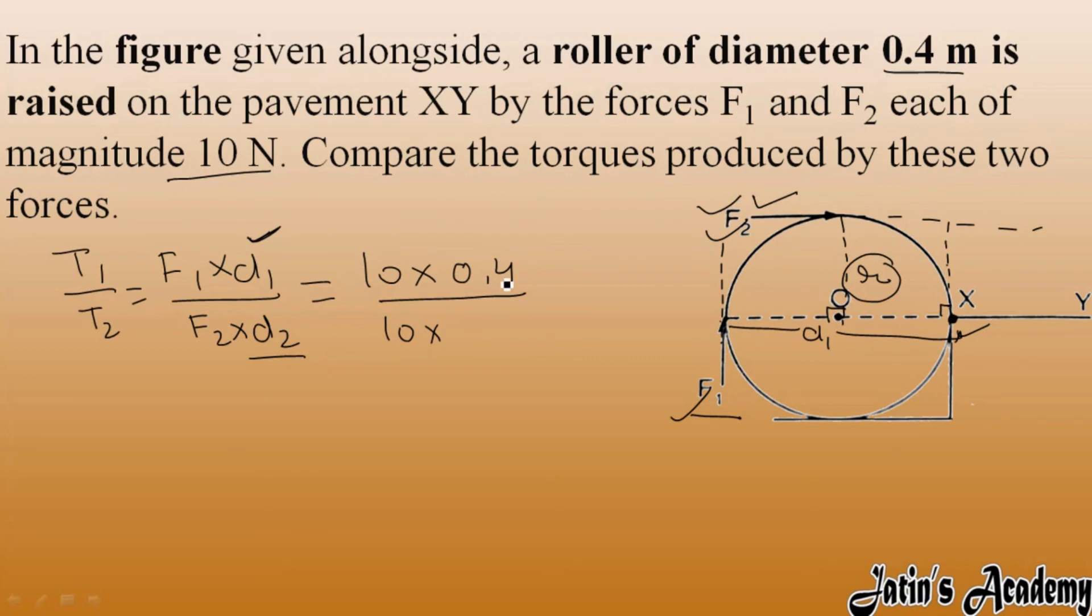So the perpendicular distance for F2, which is d2, equals the radius. The diameter is 0.4, so radius is 0.2. Put the value 0.2 here. Now you can solve easily: 10 and 10 cancel out, it becomes 4 by 10 and 2 by 10, so 2 and 2 cut. Torque 1 by torque 2 equals 2 by 1, that is 2 ratio 1.